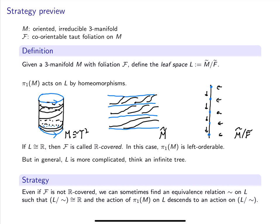In the generic case, L is more complicated. Think some kind of infinite tree. To be more precise, it's a simply connected but possibly non-Hausdorff 1-manifold. We'll try to define an equivalence relation on L such that L modulo this equivalence relation is ℝ, and such that the action of π₁(M) on L descends to an action on the quotient. Now in this talk, I hope to show you that this idea is not hopelessly optimistic, and it actually applies to a large class of foliations built from pseudonosov flows.